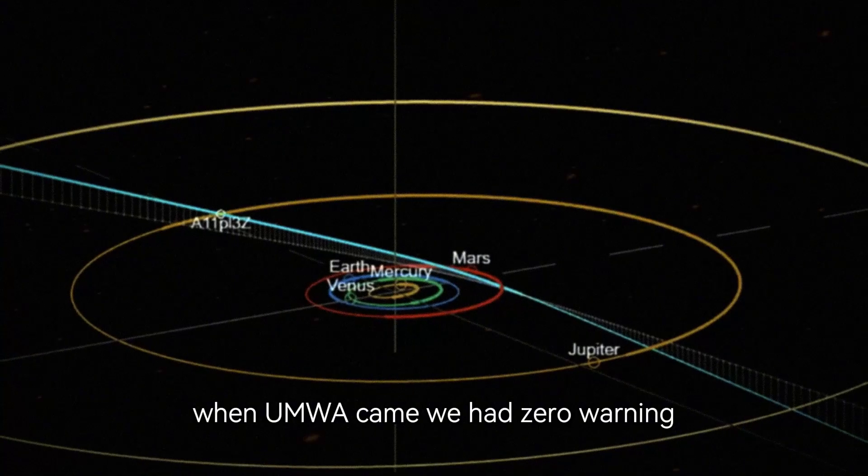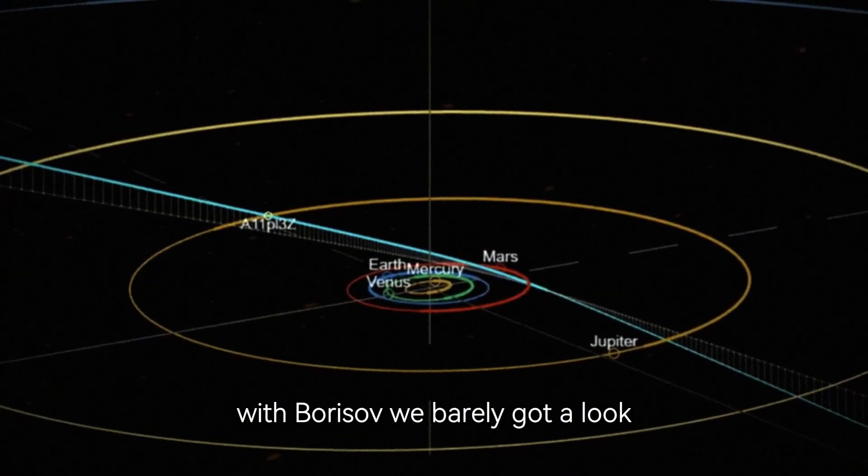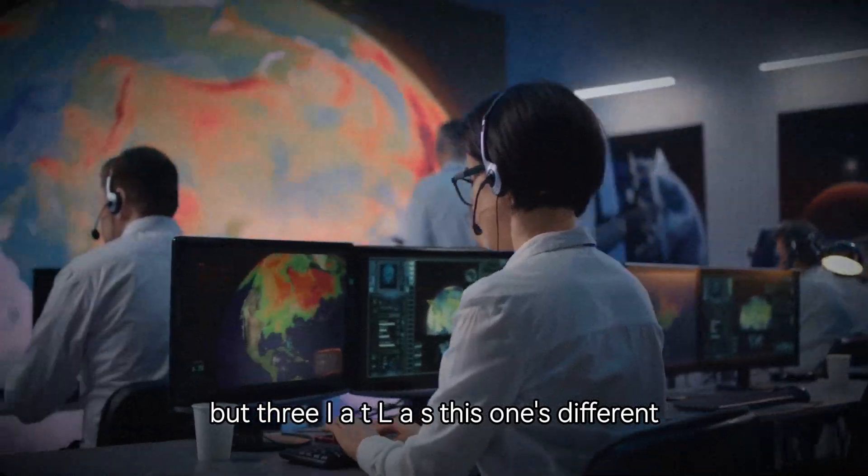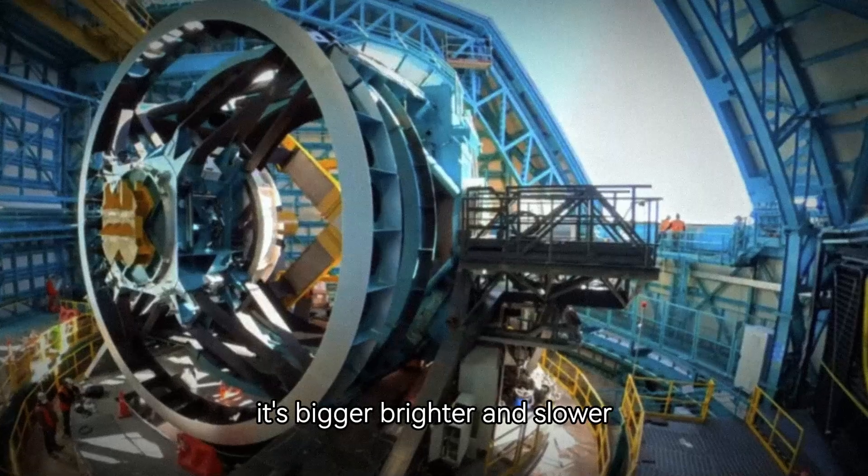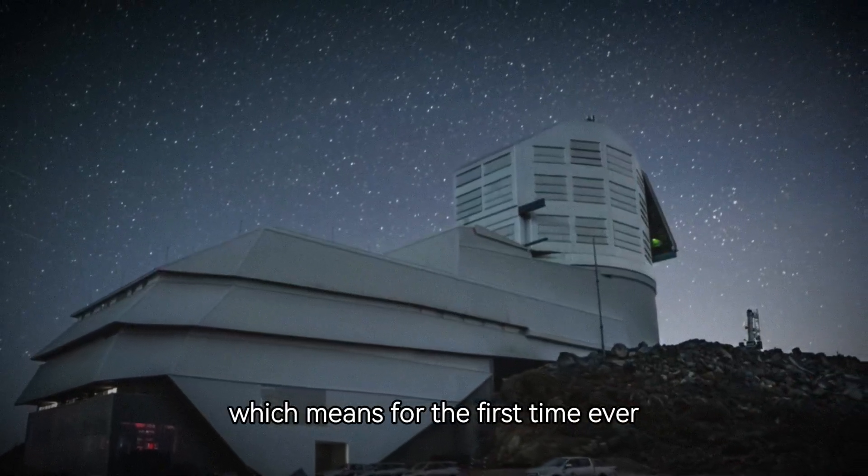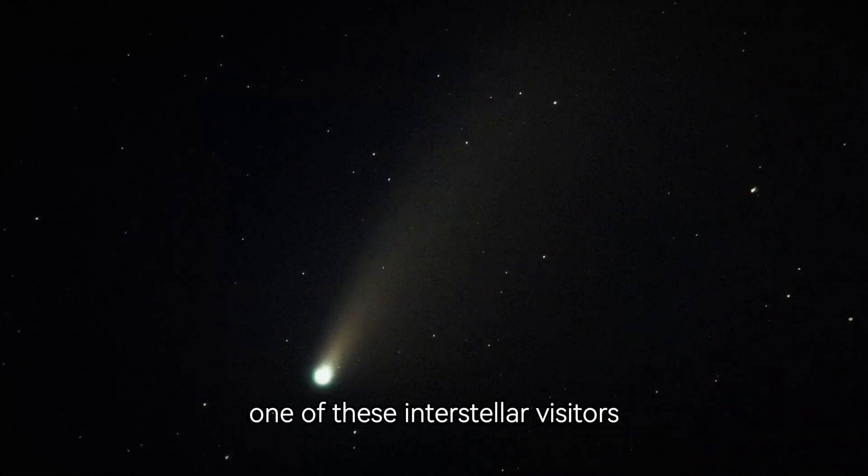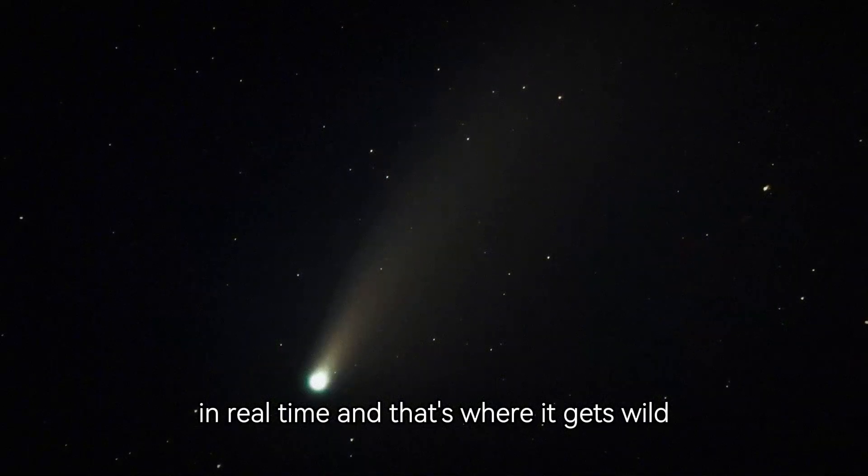When Oumuamua came, we had zero warning. With Borisov, we barely got a look. But 3i Atlas? This one's different. It's bigger, brighter, and slower, which means for the first time ever we can actually study one of these interstellar visitors in real time. And that's where it gets wild.